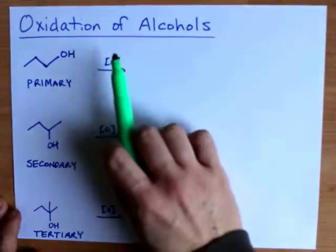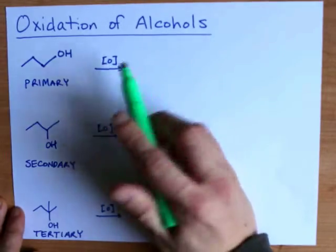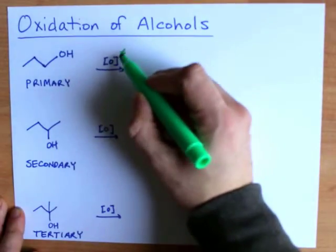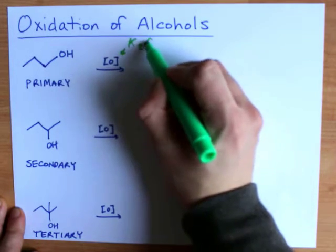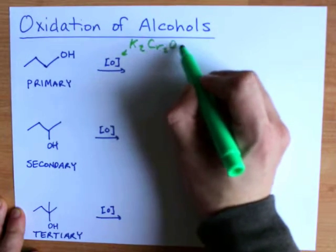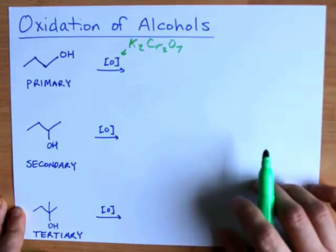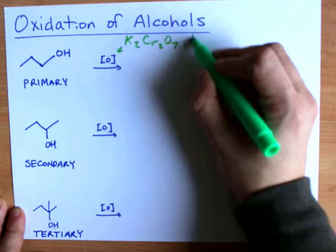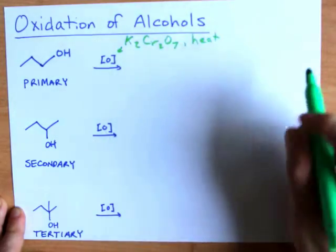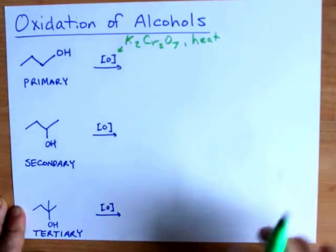Now this O in square brackets usually represents some kind of oxidizing agent. Very often it's dichromate. That's Cr2O7 2- present as potassium dichromate. And usually you'll want some heat as well. It's called reflux conditions.